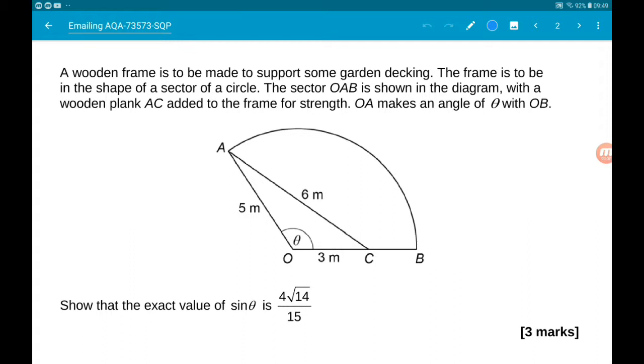The frame is to be in the shape of a sector of a circle. The sector OAB is shown below with a wooden plank AC added to the frame for strength.